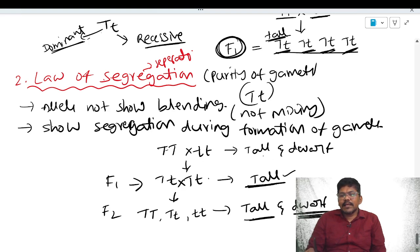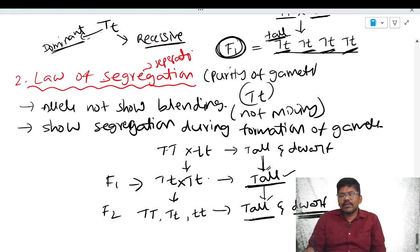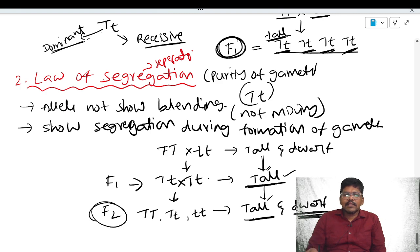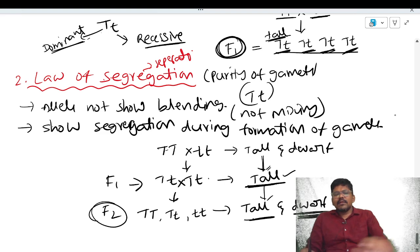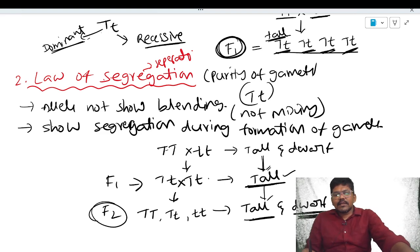Based on this, we can identify that the dwarf character is transmitted from the parental generation to the F2 generation. That is about the law of segregation. In the next class, we will see about the dihybrid cross, and after that, we will see about the law of independent assortment.